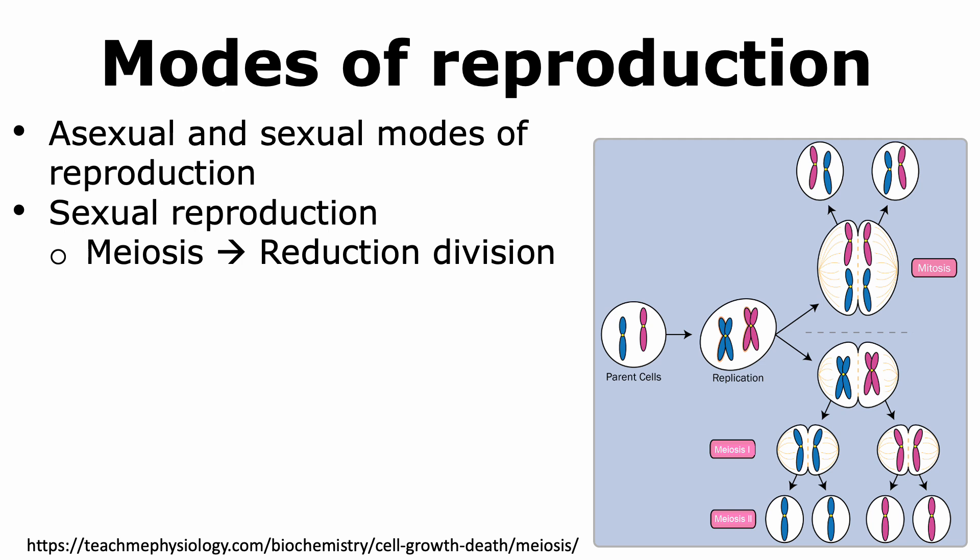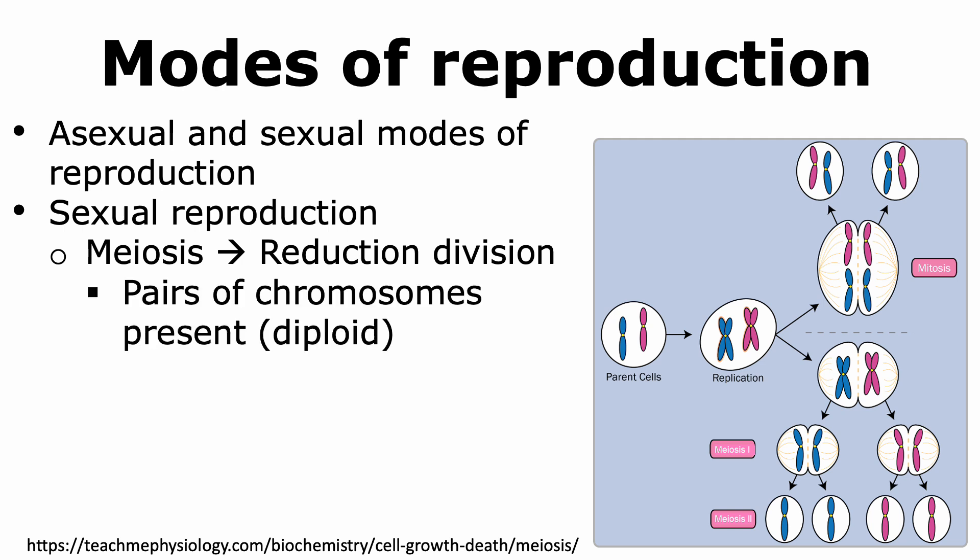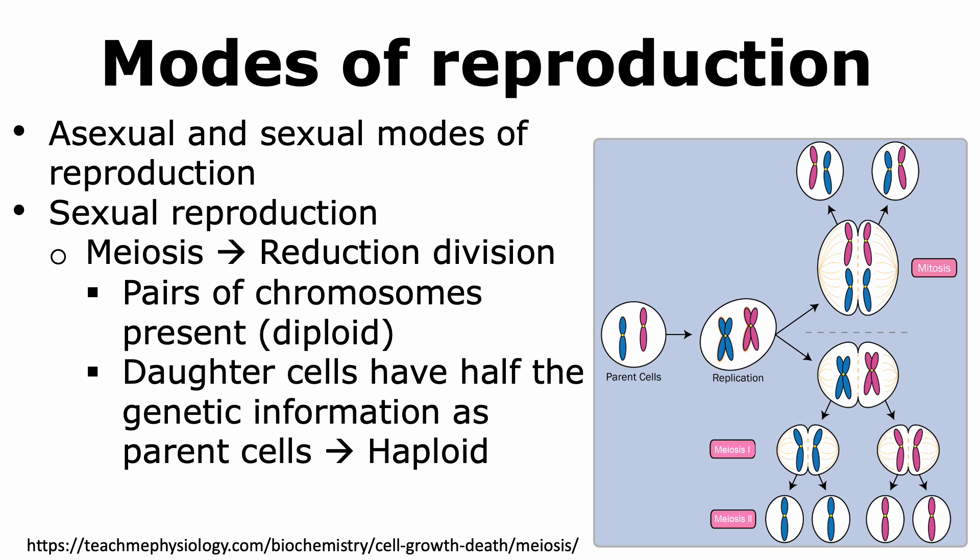Protists can also show sexual modes of reproduction. Sexual reproduction usually involves meiosis, which is a type of cell division that results in the reduction of the number of chromosomes. For meiosis to happen, pairs of chromosomes — homologous chromosomes — have to be present, and hence the organism has to be diploid. It is possible that an organism was able to create pairs of its chromosomes through genome duplication events. Once homologous chromosomes are present, meiosis is possible.